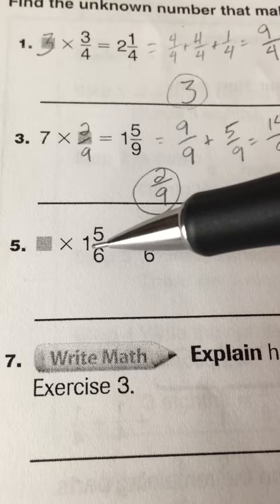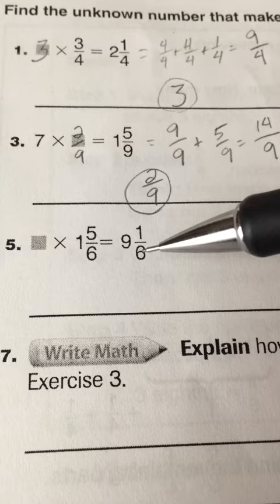For number 5, we're going to have a whole number times the mixed number 1 and 5 sixths, and that's going to equal 9 and 1 sixth.